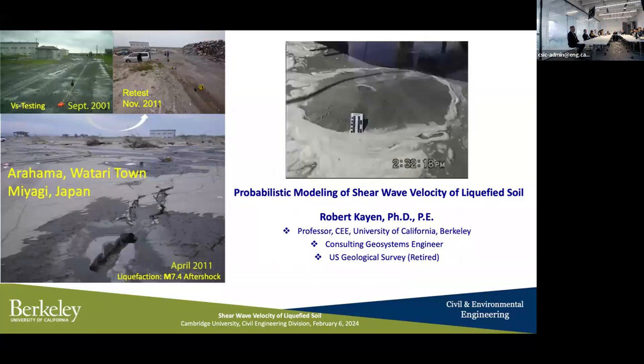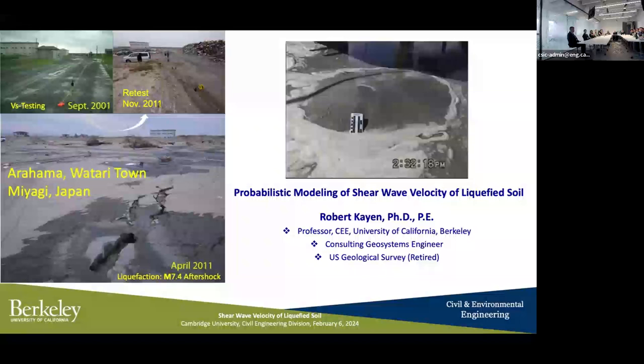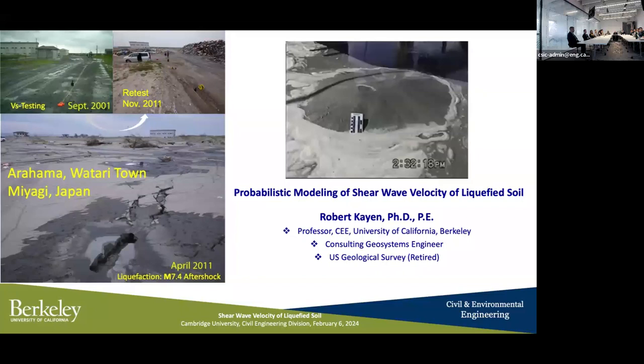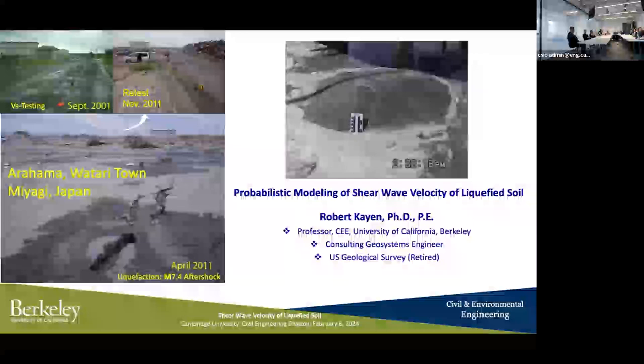I'm delighted to welcome Robert Kahan from UC Berkeley. Robert is a graduate professor at UC Berkeley in the Civil Engineering Department and recently retired as senior scientist at the US Geological Survey. He has taught at Berkeley for many years, completed his PhD there, and previously held appointments at UCLA and in Japan.